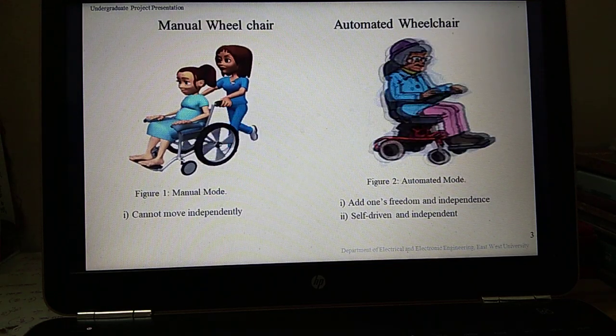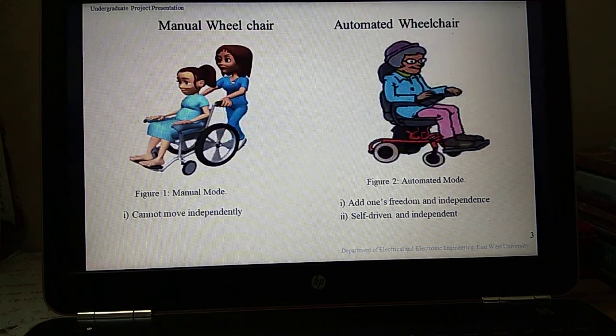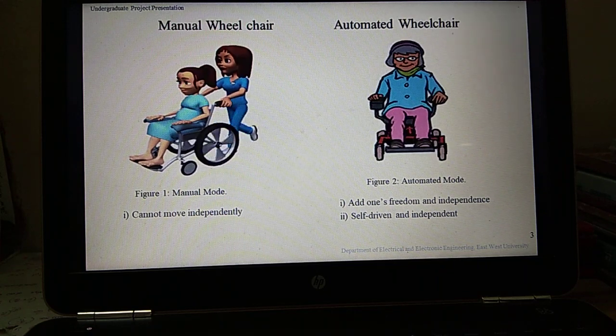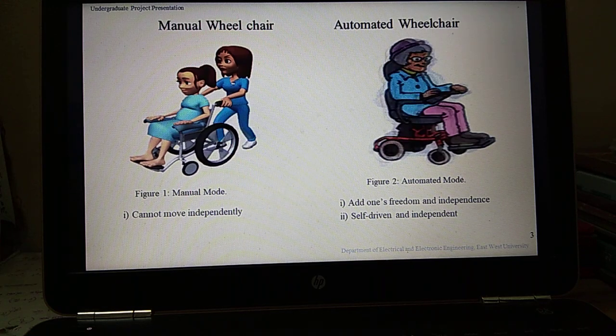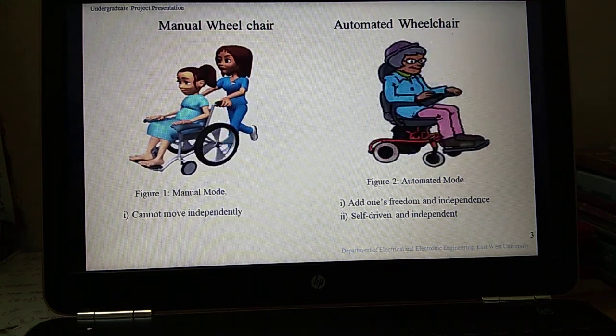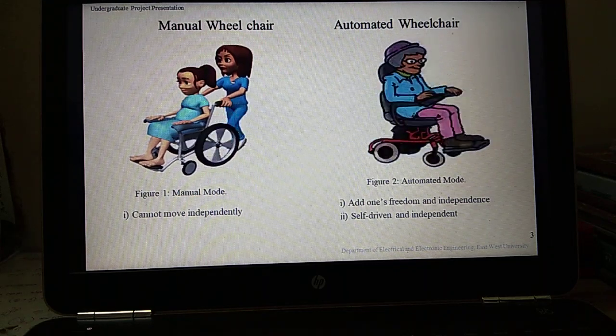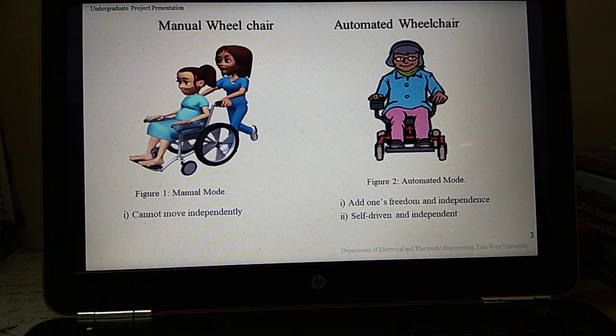There are many types of wheelchairs, but based on working principle we can classify them mainly into two types: manual wheelchair and automated wheelchair. By using a manual wheelchair, a person cannot move independently, but the features of an automated wheelchair give a person freedom to move independently without other support.